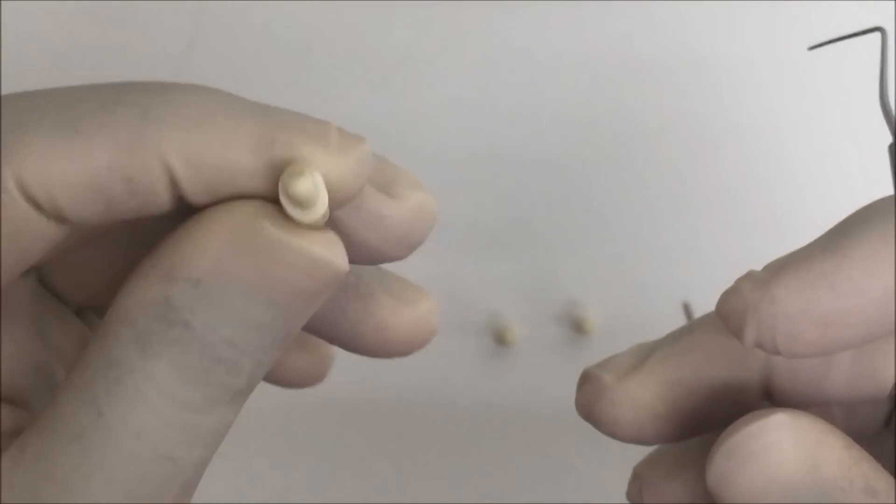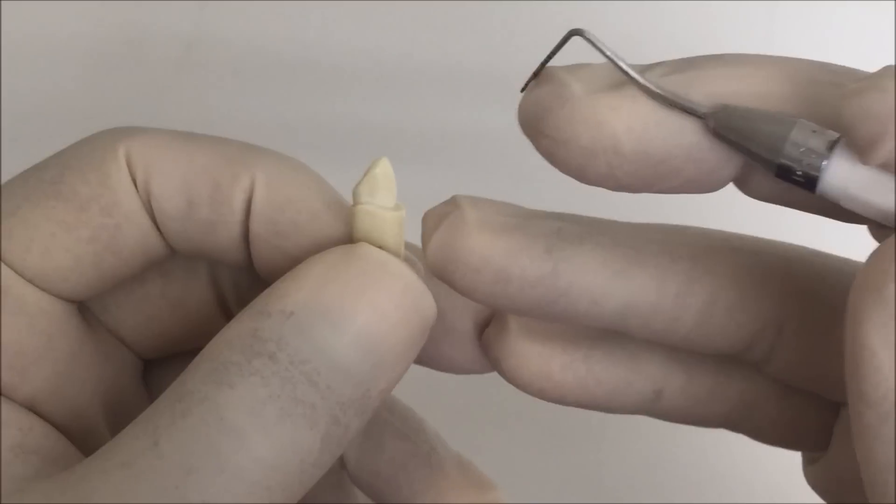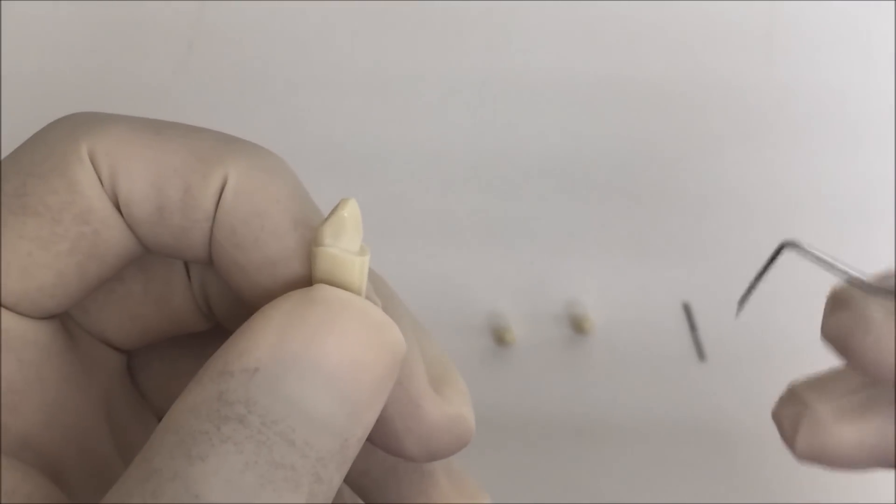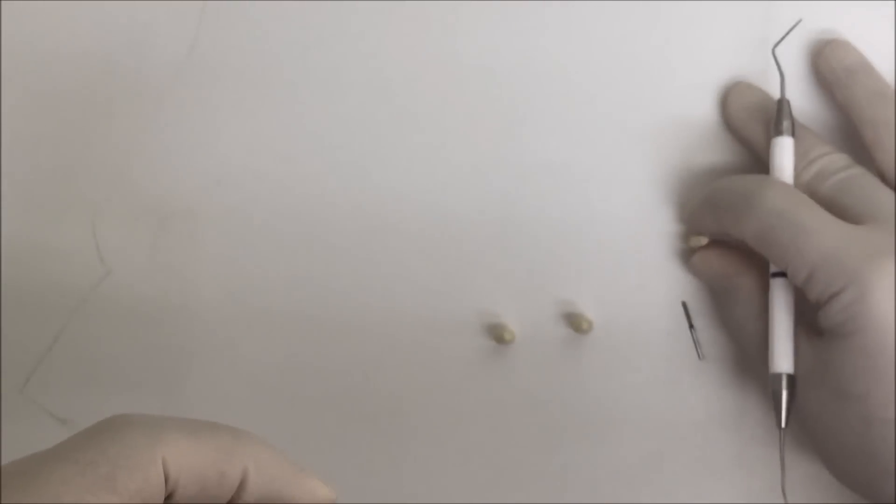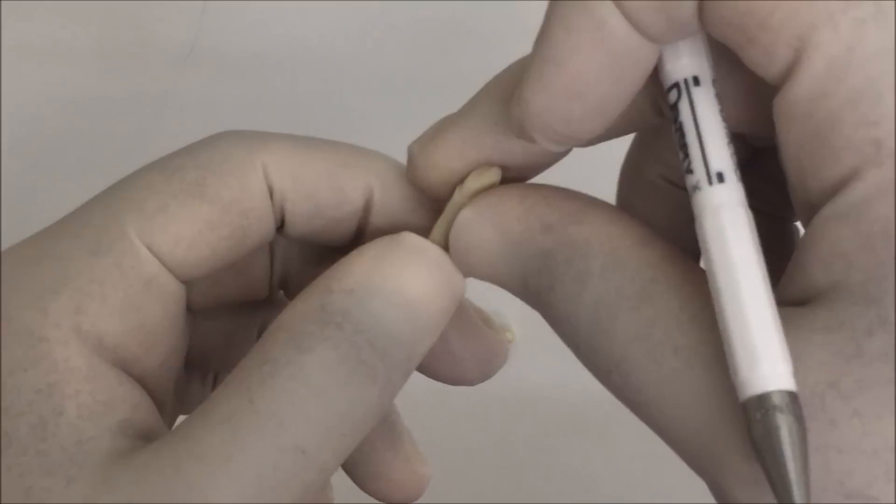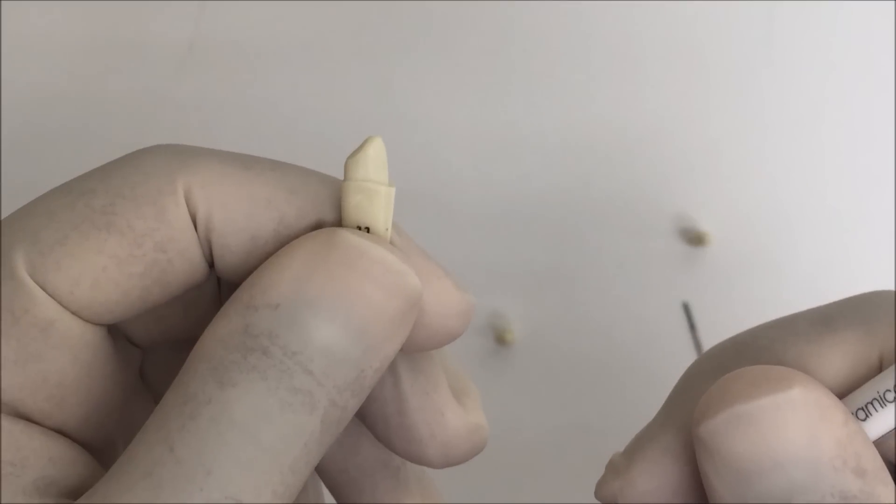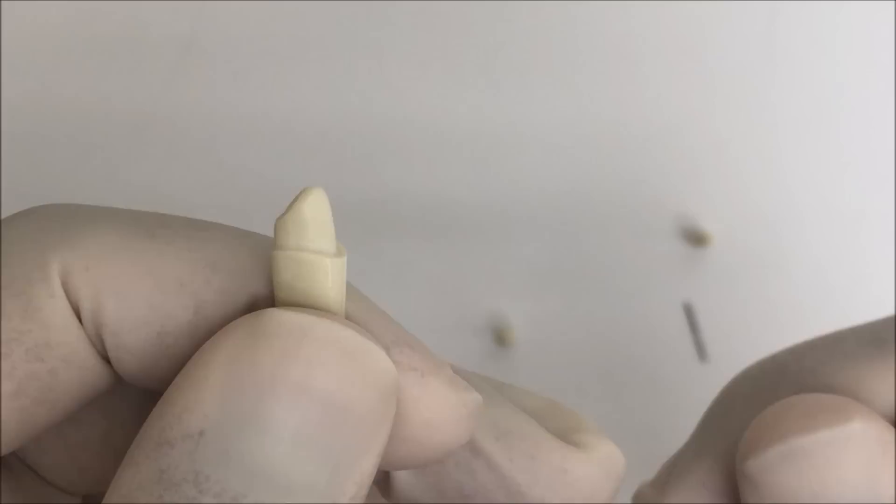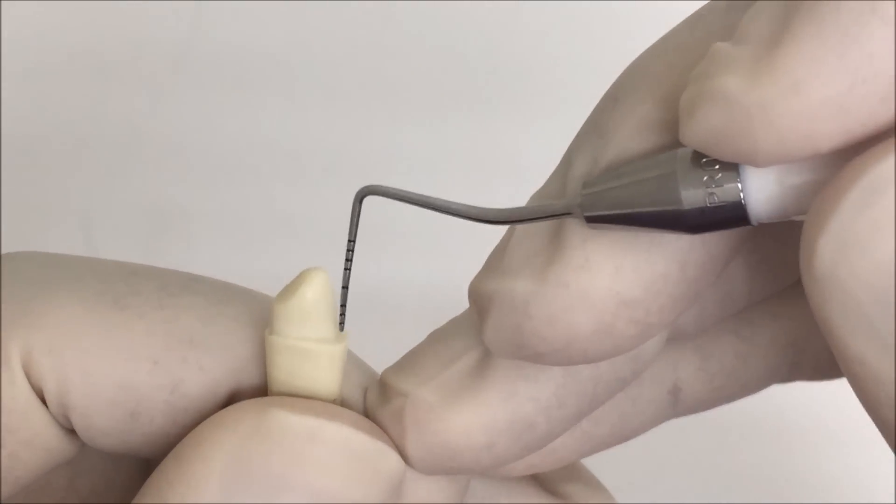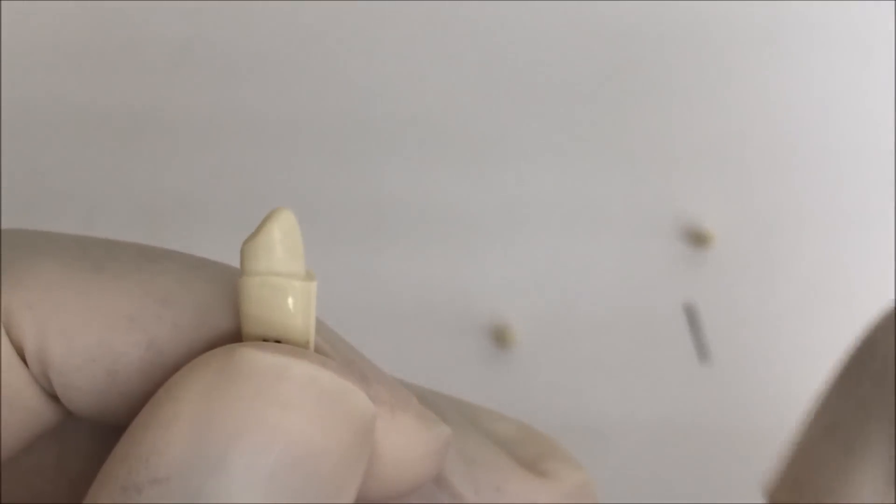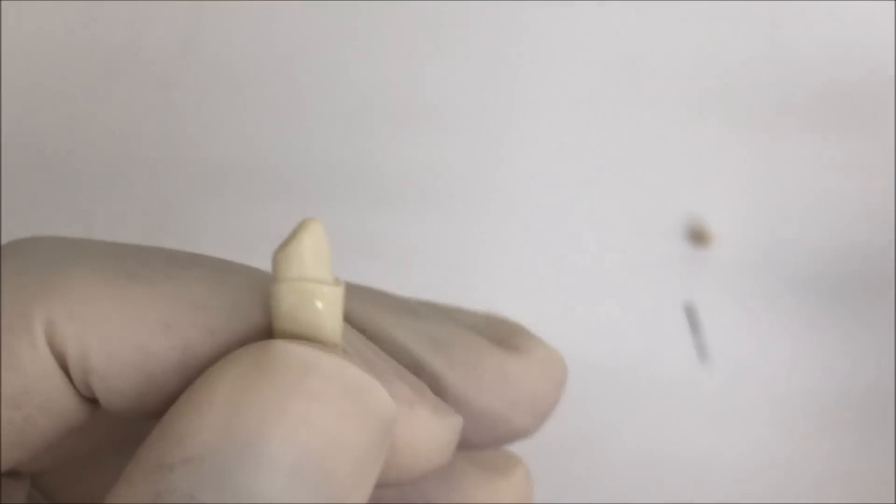As you can see here, this preparation has undercut labially, which I did for the purpose of this video. I will first show you a good preparation with good taper without undercut. When you check the profile of the tooth proximally, you can see it has no undercut here. This is the second method of checking.